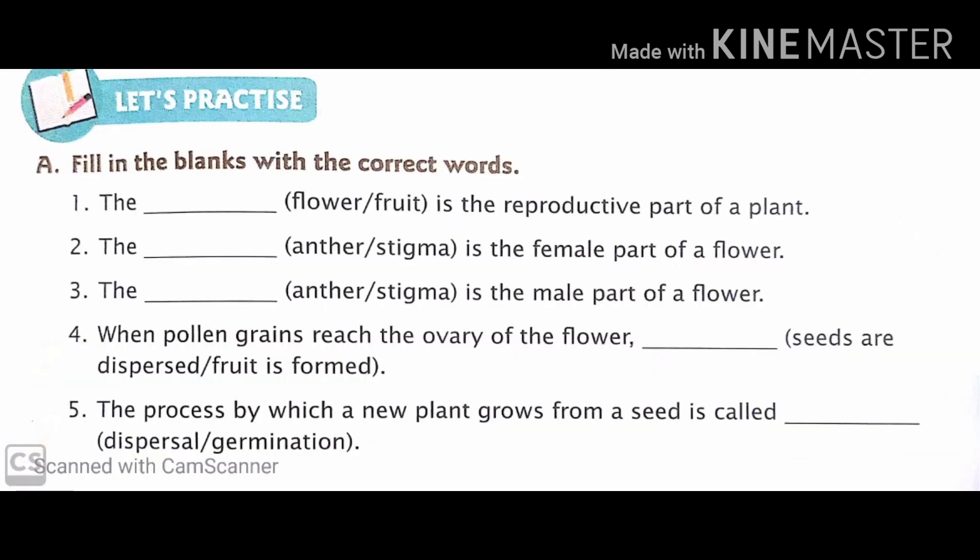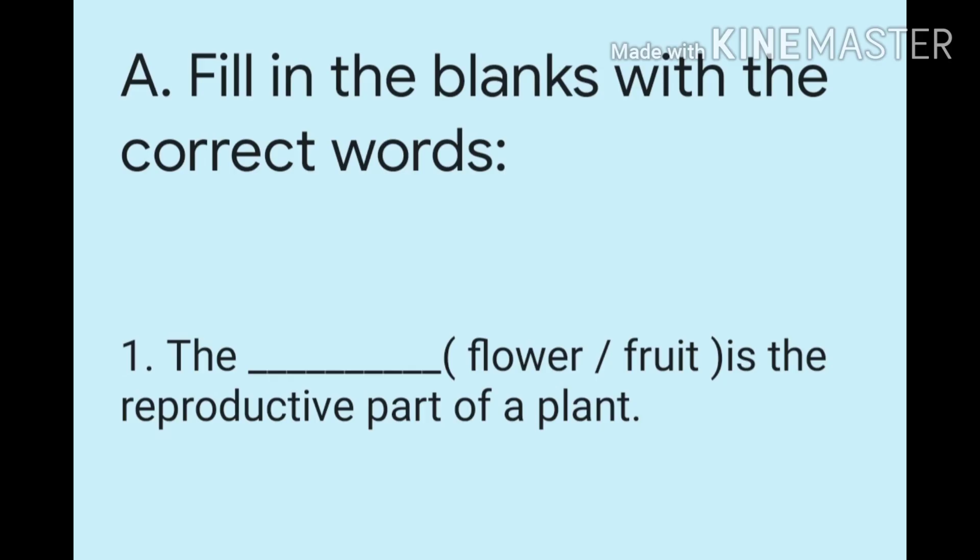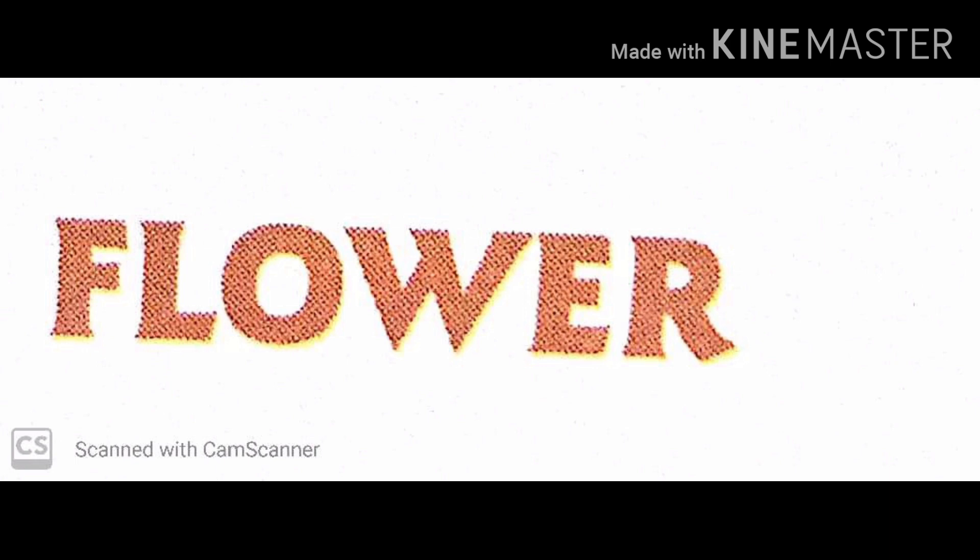Students, let us discuss the exercises. Fill in the blanks with the correct words. Two options have been given and we will fill in the blank with the right answer. First one is the dash is the reproductive part of a plant. The options are flower or fruit. Yes, the right answer is flower.